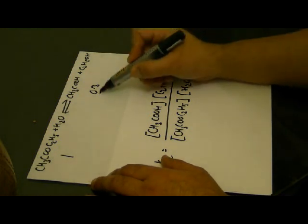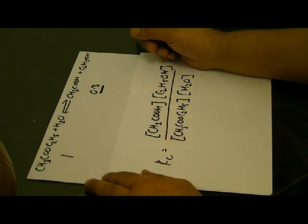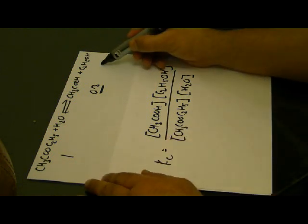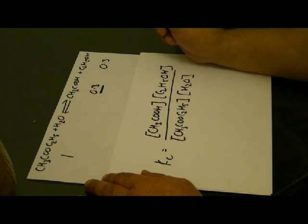So if I've got 0.3 moles of ethanoic acid, I'm going to get 0.3 moles of ethanol.